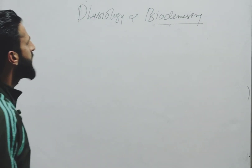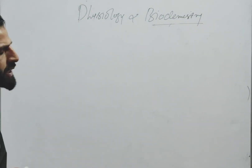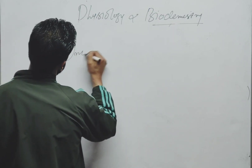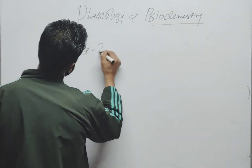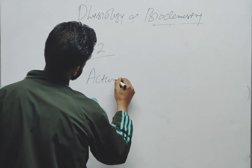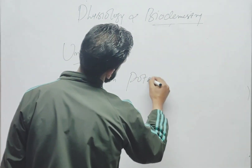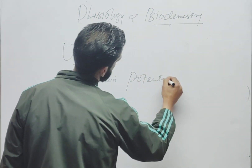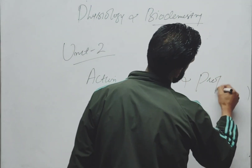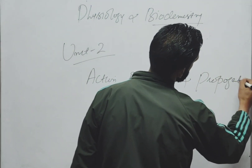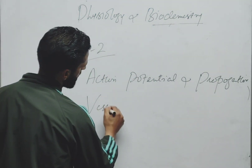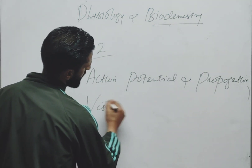In Unit 2, a direct question will come from action potential and propagation. This is a key topic — action potential and its propagation. Additionally, vision will have an elaborate question; you need to elaborate on vision in detail.